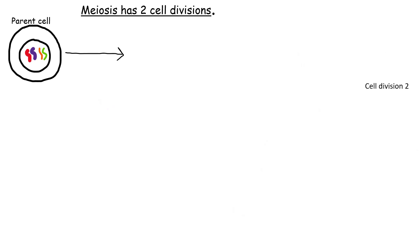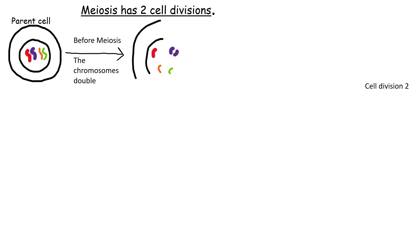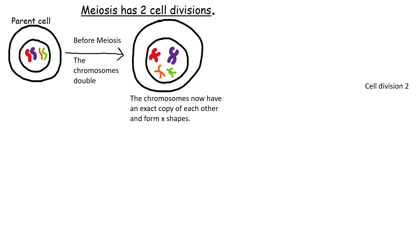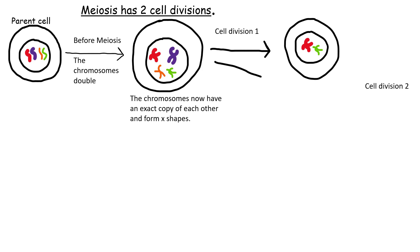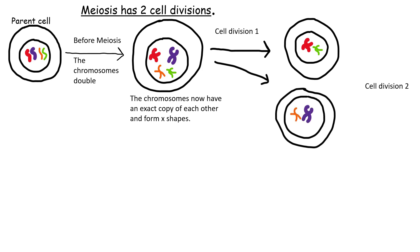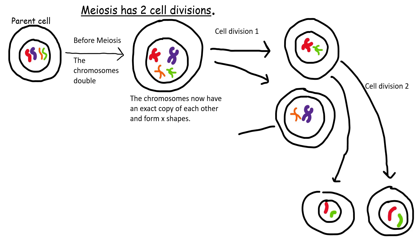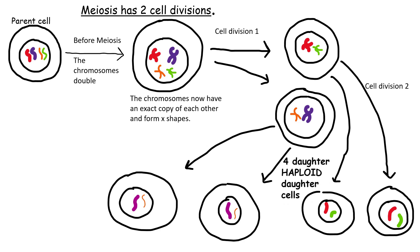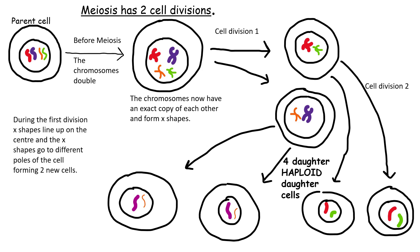Meiosis actually has two cell divisions to get the four daughter cells. Before meiosis, the chromosomes double — they form X shapes. In the first cell division, it divides into two cells; the X shapes move into two different ends of the cell and are pulled apart. In the second cell division, the X shapes are torn apart, and we end up with four haploid daughter cells. So unlike mitosis, meiosis has two separate cell divisions: first to two cells, then to four cells.